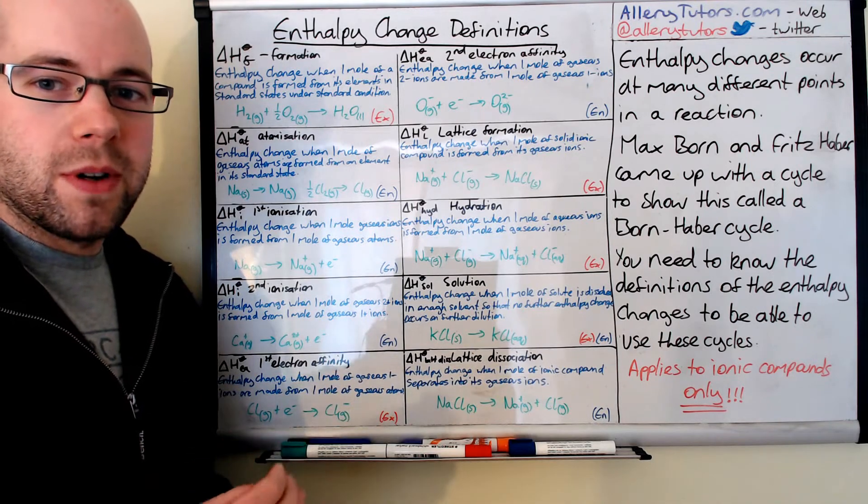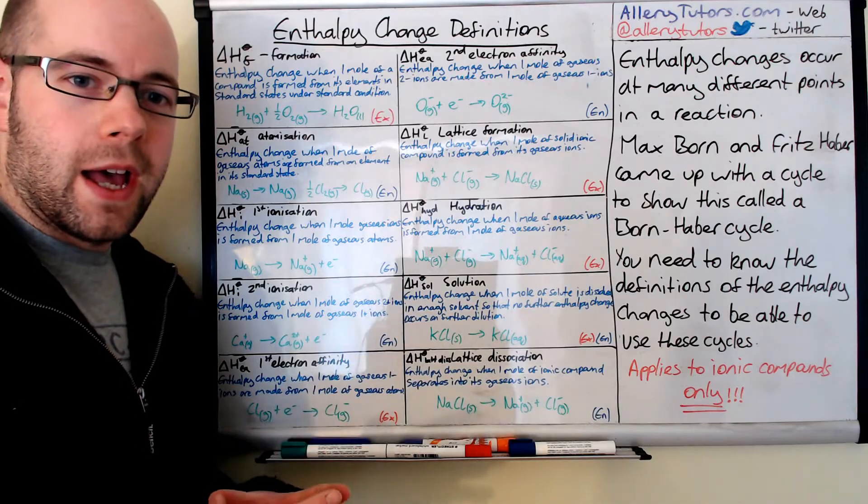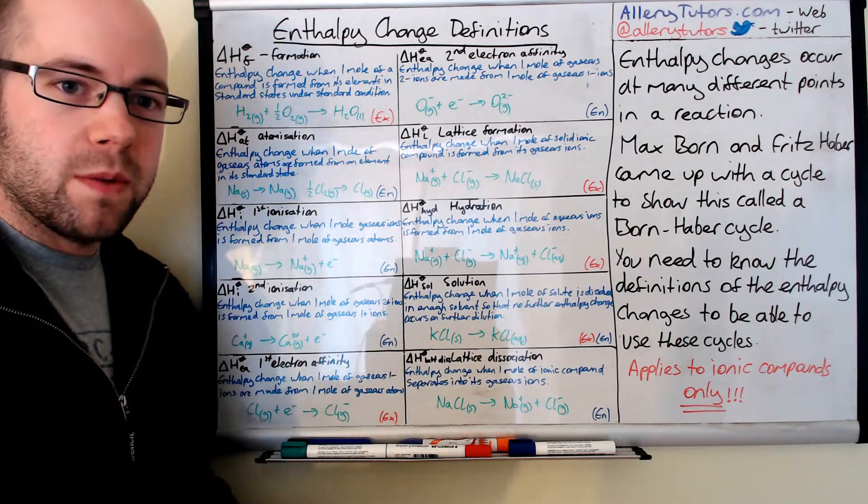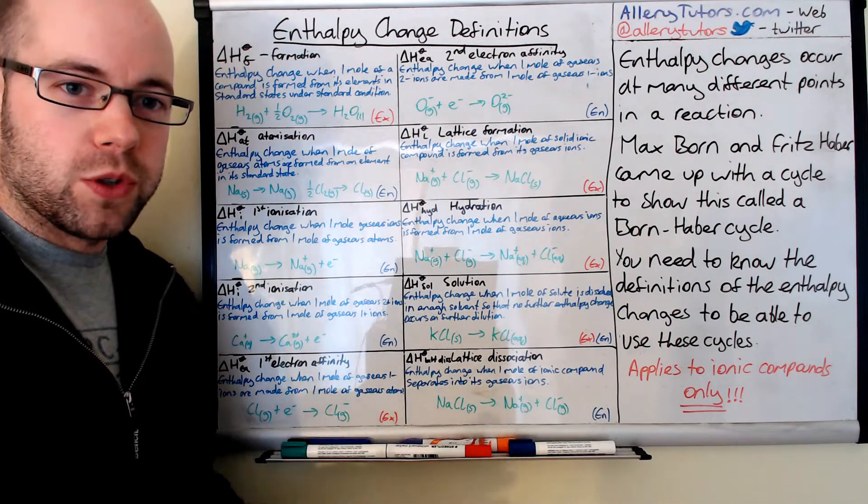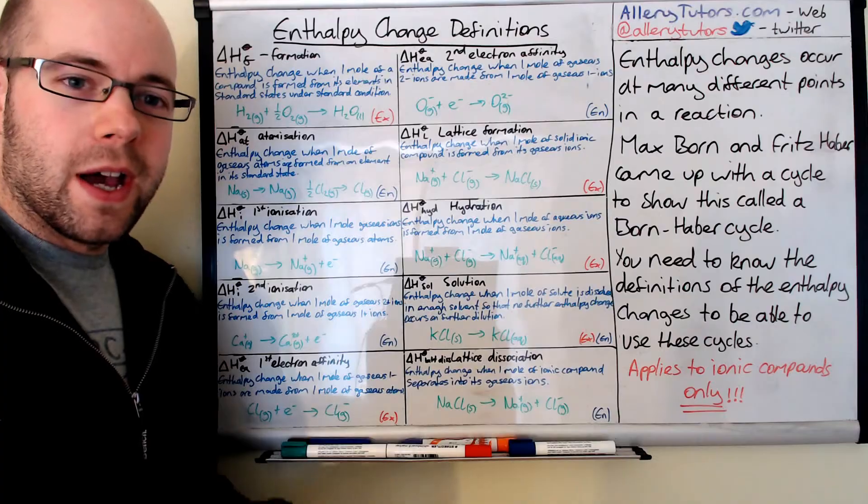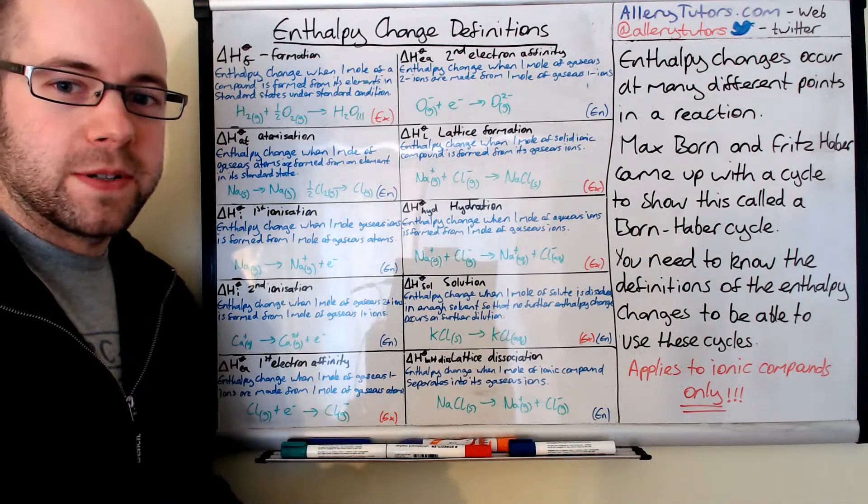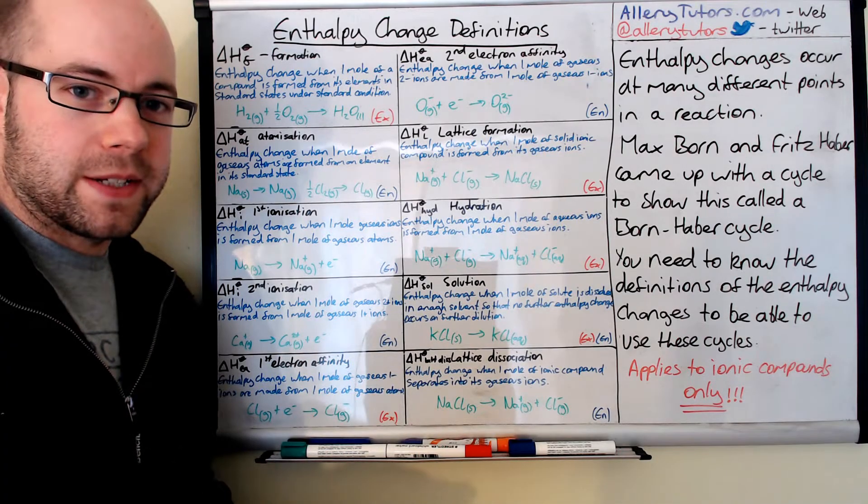We're going to start with these different types of enthalpy changes. They happen all the time in reactions for various reasons. It may be because a bond's been broken or electrons are being moved from one place to another, or because water is effectively breaking up an ionic compound and surrounding it. So we're getting hydration enthalpies. We're going to go through all these different types with the symbols and give you examples.